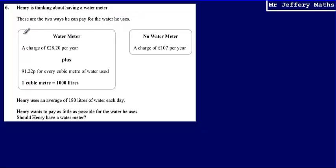And we've got some information here about the water meter. And then we're told with no water meter, it's just a flat rate charge of £107 per year. We're told that Henry uses an average of 180 liters of water each day. Henry wants to pay as little as possible for the water he uses.